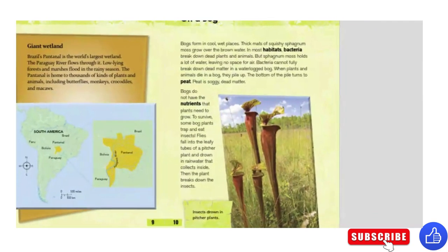Giant Wetland. Brazil's Pantanal is the world's largest wetland. The Paraguay River flows through it. Low-lying forests and marshes flood in the rainy season. The Pantanal is home to thousands of plants and animals, including butterflies, monkeys, crocodiles, and macaws.